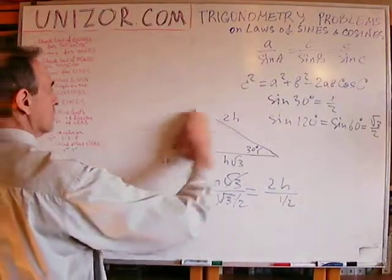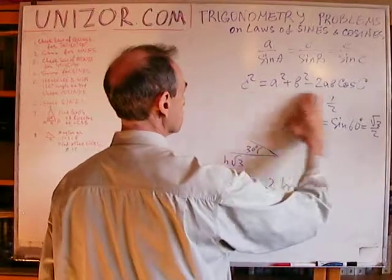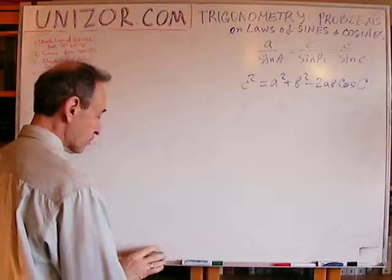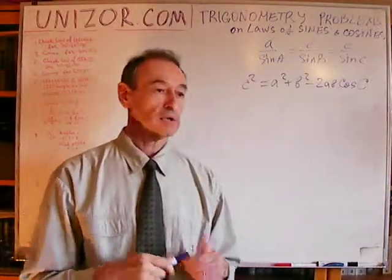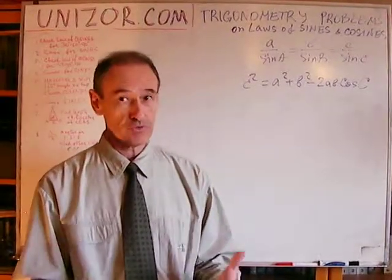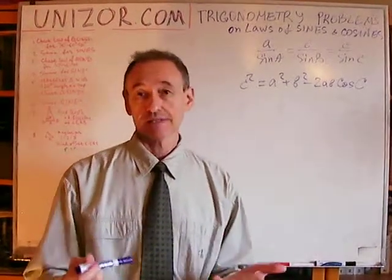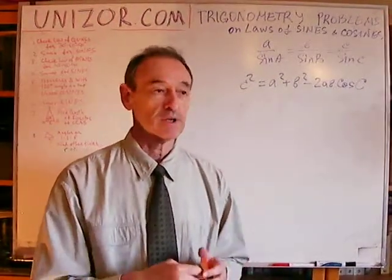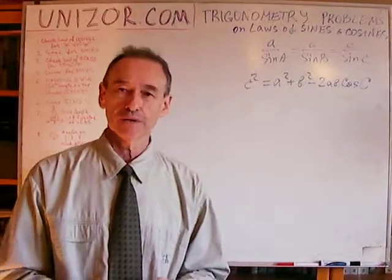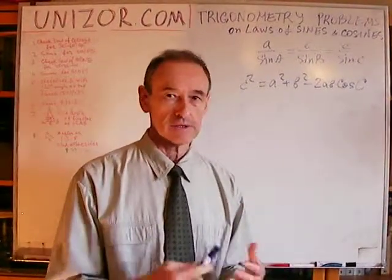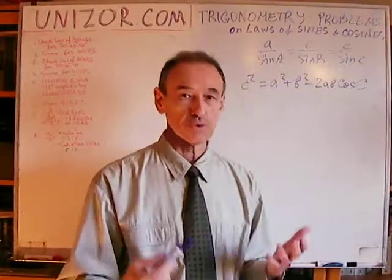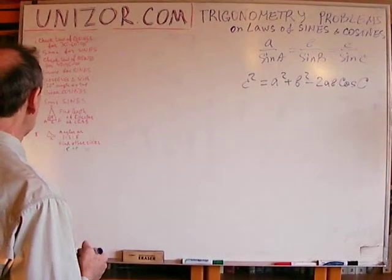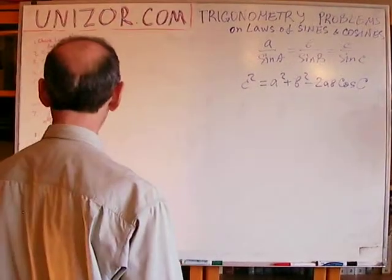So we have checked the validity of the laws of sines and cosines for three different types of triangles. While this doesn't prove anything, it confirms that the laws make sense and the abstract proof is really applicable. You can feel more confident that these are true statements about triangles. Now let's solve a simple problem.